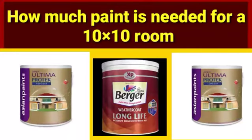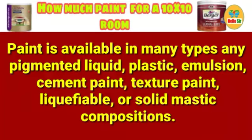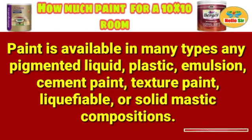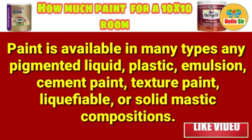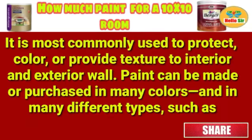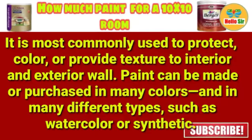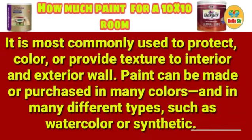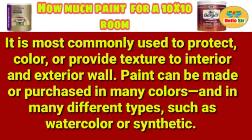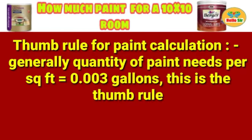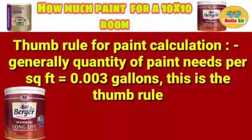Today we will discuss how much paint is needed for a 10 by 10 room. Paint is available in many types: pigmented liquid, plastic emulsion, cement paint, texture paint, liquid or solid mastic. It is most commonly used to protect, color, or provide texture to interior and exterior walls. Paint can be made or purchased in many colors and types, such as watercolor or synthetic.